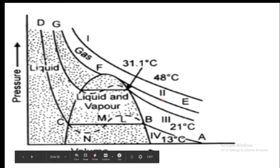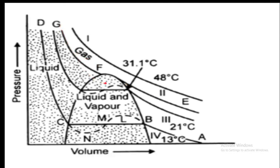Now let us consider the next isotherm, which is at 31.1 degrees centigrade. In this isotherm, the horizontal portion is reduced to a mere point at F. In isotherms at higher temperatures, such as 48 degrees centigrade, the horizontal portion is totally absent, indicating that liquefaction does not occur.